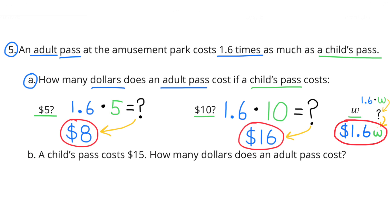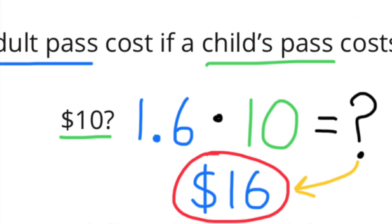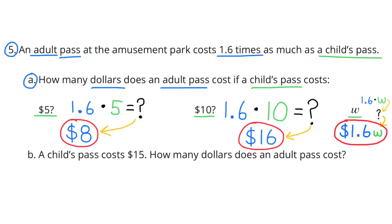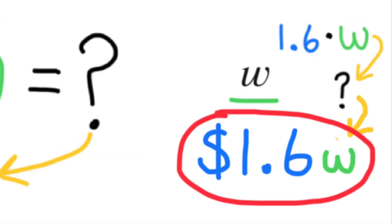When the child's pass costs $10, the answer is twice as much as when it was $5. 1.6 times 10 equals $16. When the child's pass costs $10, the adult's pass costs $16. When the child's pass costs $15, the adult's pass would cost 1 and 6 tenths times W, or 1.6W.